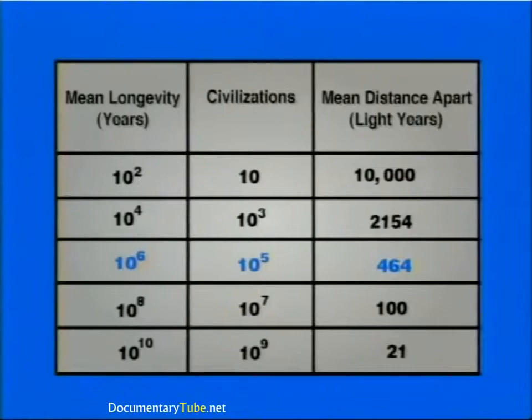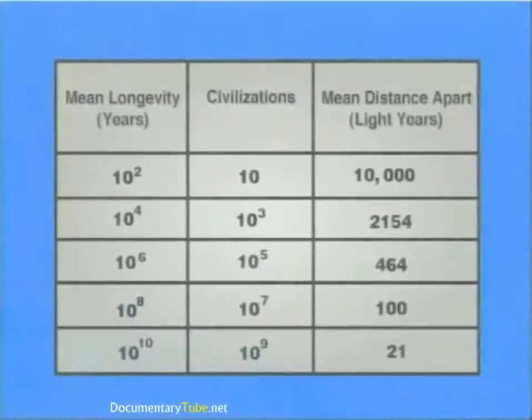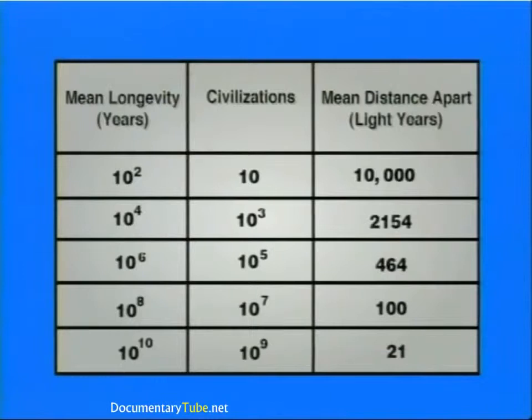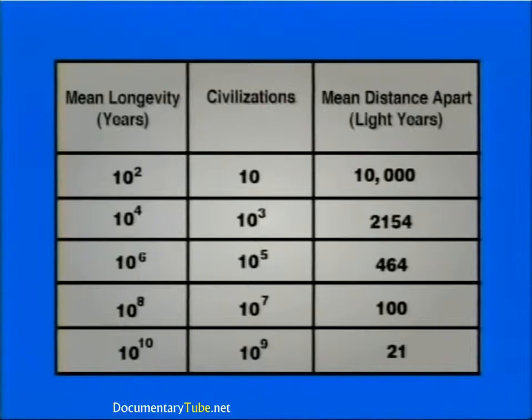It is now 1996, and we have been in the category of an advanced communicative civilization for just over 60 years. Some argue that we will not survive for much longer. Therefore, we sometimes leave the value for L blank, and see how N varies when we substitute different values for L. Based on the resulting value of N, we can calculate the mean distance between communicative civilizations in the Milky Way galaxy. Using the values previously given, our calculation for N equals 0.1 L. The following table demonstrates the different N values and mean distances when we select a range of L values.